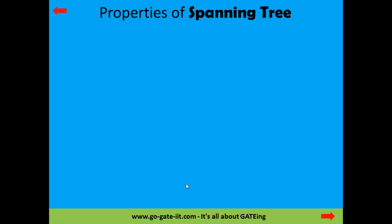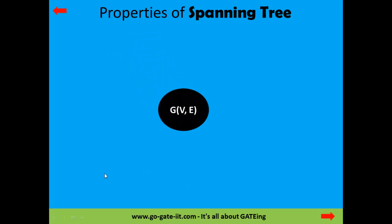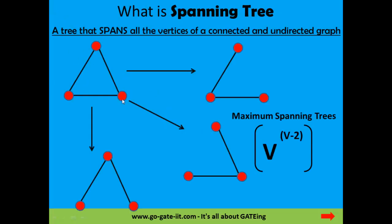Now there are basic properties of a spanning tree. Consider a graph with a set of vertices V and edge set E. The first property: a spanning tree must contain only V minus 1 edges. As shown here, we have a graph with three vertices and three edges, so our spanning tree can have only V minus 1 edges, that means 3 minus 1 equals 2. You can notice that every spanning tree has only 2 edges.